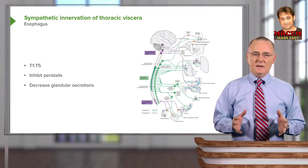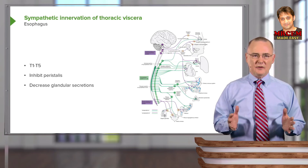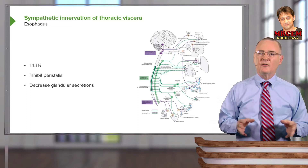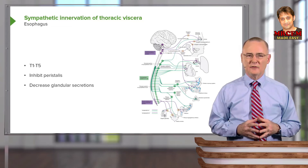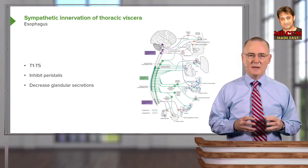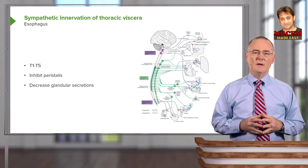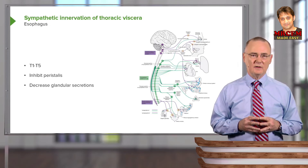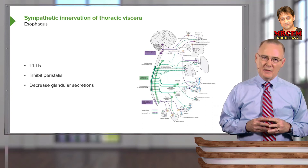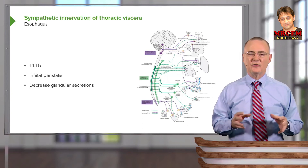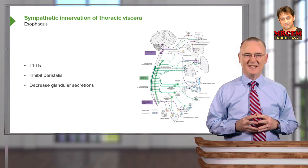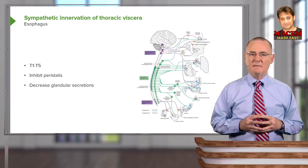Sympathetic innervation of the esophagus also originates from T1 to T5 preganglionic neurons. The postganglionic fibers from the sympathetic trunks innervate the esophagus, where sympathetics inhibit peristalsis — the opposite of what parasympathetics do — and decrease glandular secretions from the esophagus.